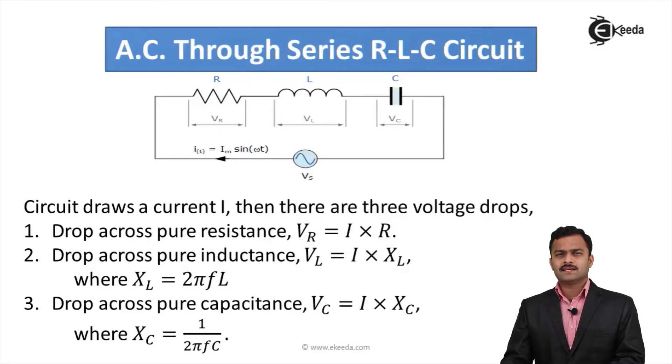I have drawn a circuit where all the passive components are connected in series RLC to the applied voltage V, which is Vm sin ωt. This will draw current I.